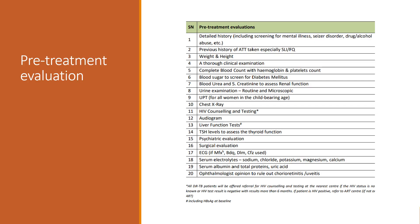Regarding the pre-treatment evaluation of Delamanid, we will be taking a detailed history, including any past history of ATT, as well as baseline liver function tests and ECG — which is very important to rule out any QT prolongation — and serum electrolytes. The major electrolyte abnormalities of concern are serum potassium, magnesium, and calcium, which are involved in QT prolongation, as well as the serum albumin level.